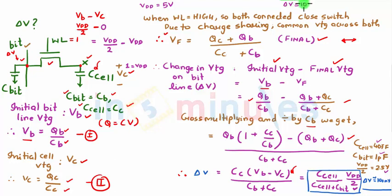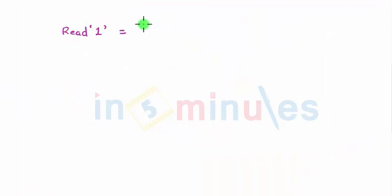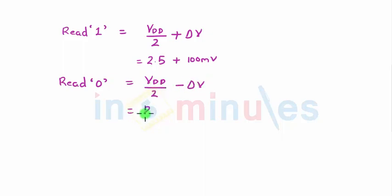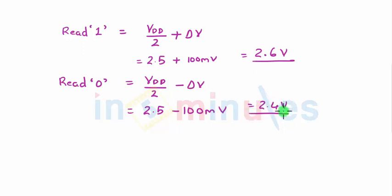We have to detect this small difference of 100 mV at the sense amplifier. In simple words: when reading a 1, the bit line goes to VDD/2 + delta V = 2.5 + 0.1 = 2.6 V. When reading a 0, the bit line goes to VDD/2 − delta V = 2.5 − 0.1 = 2.4 V. This 100 mV delta V difference is what the sense amplifier needs to detect, which we will see in the next clip.